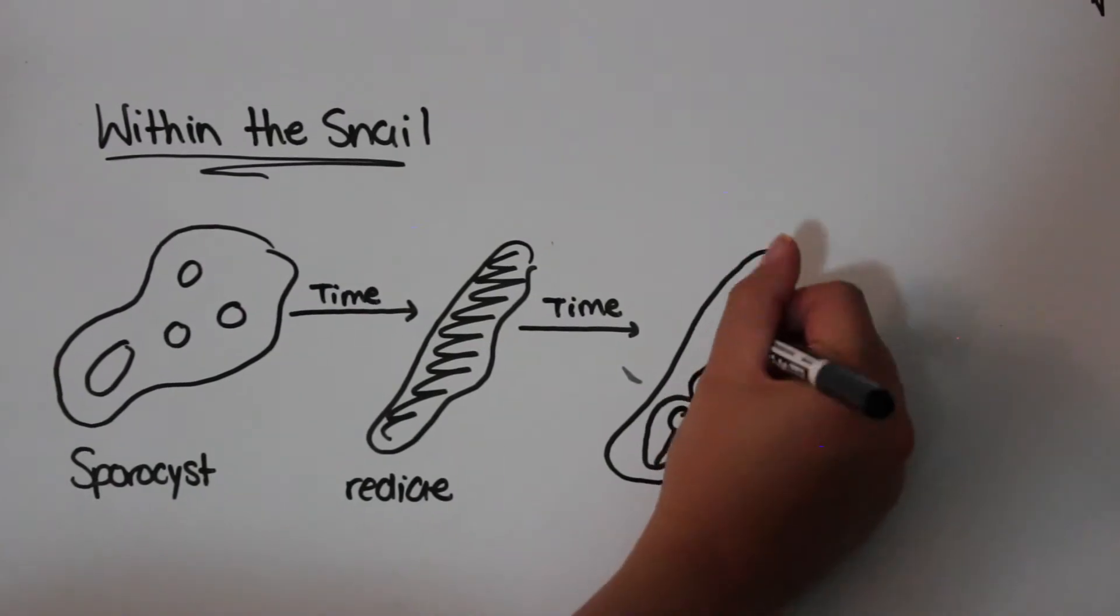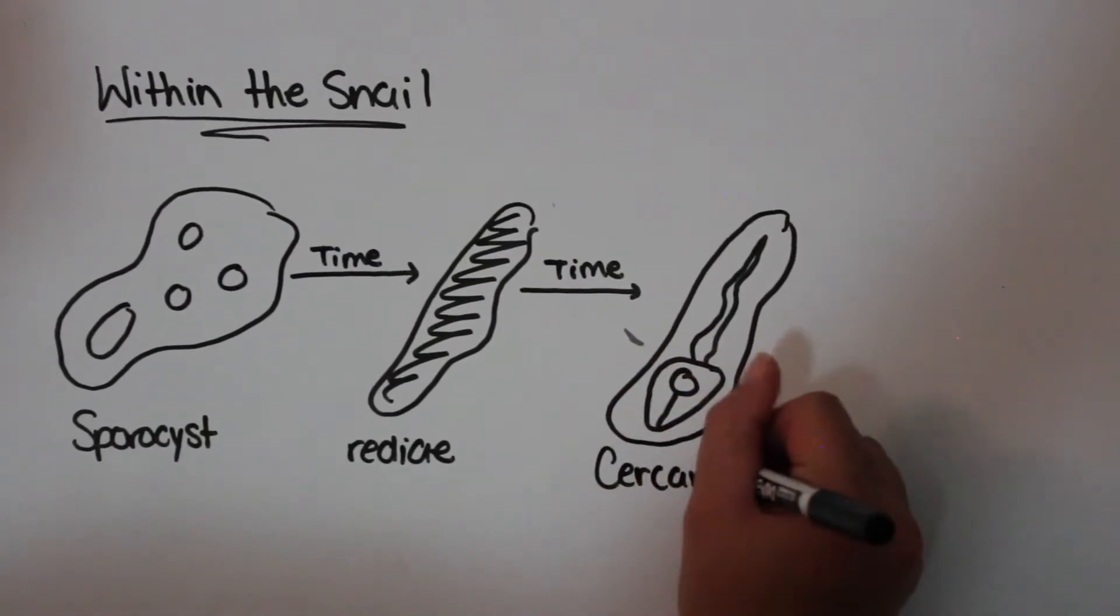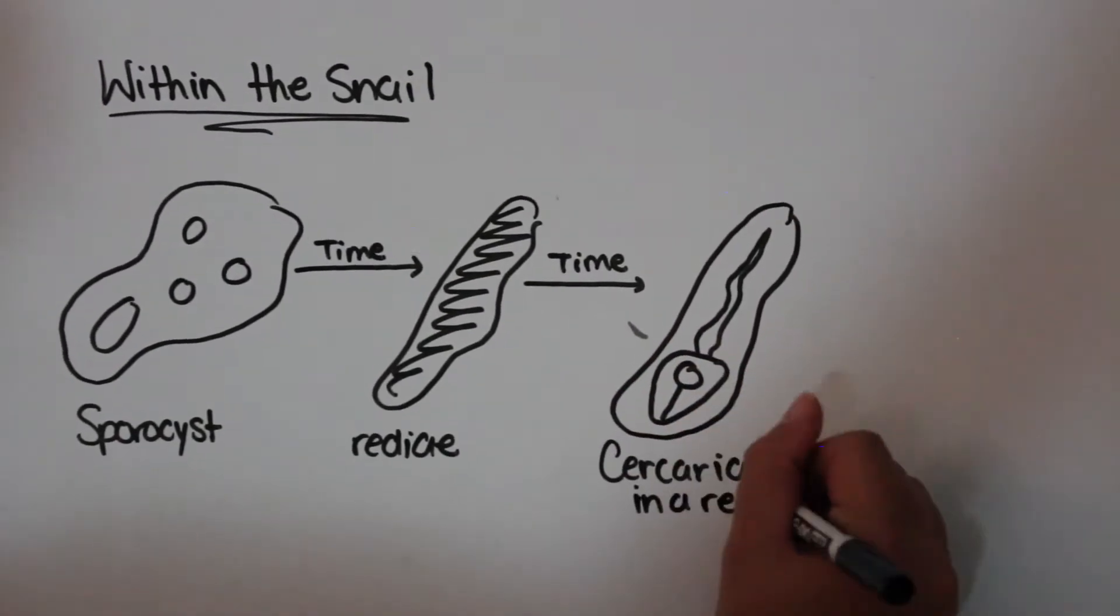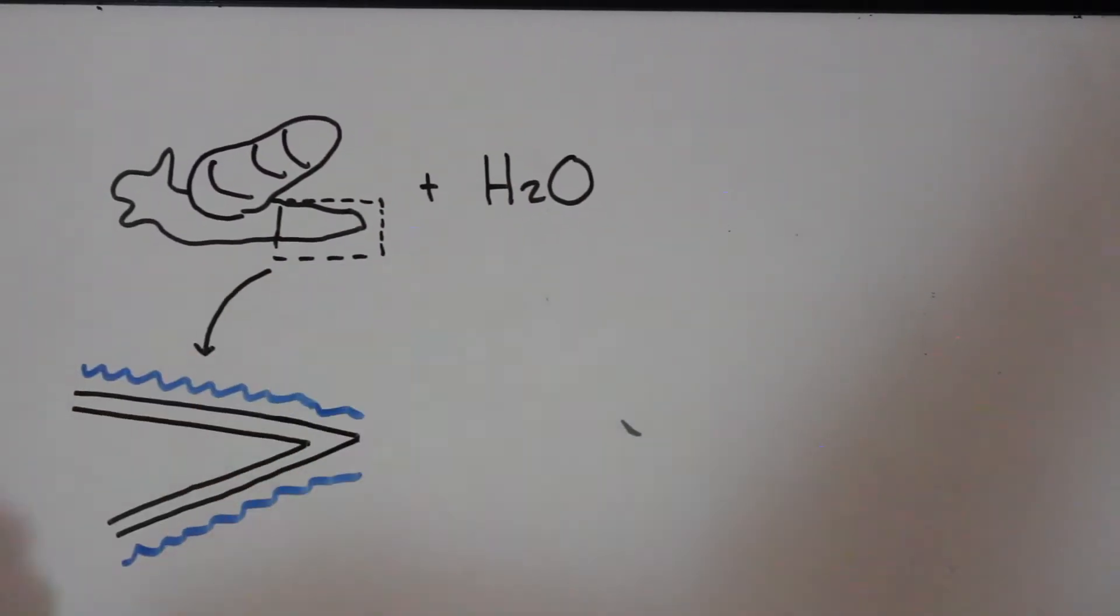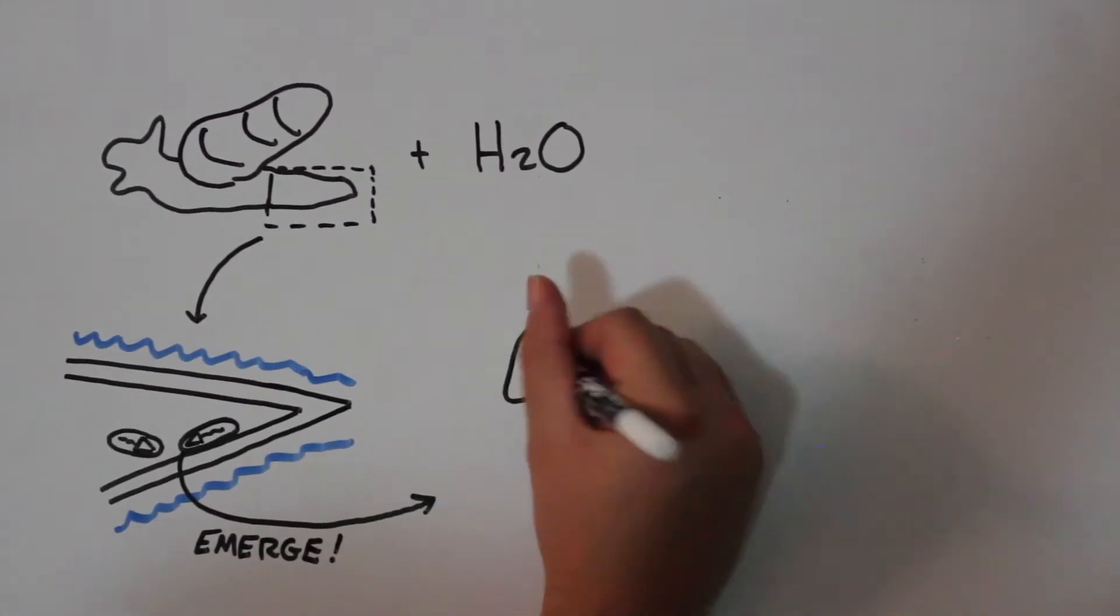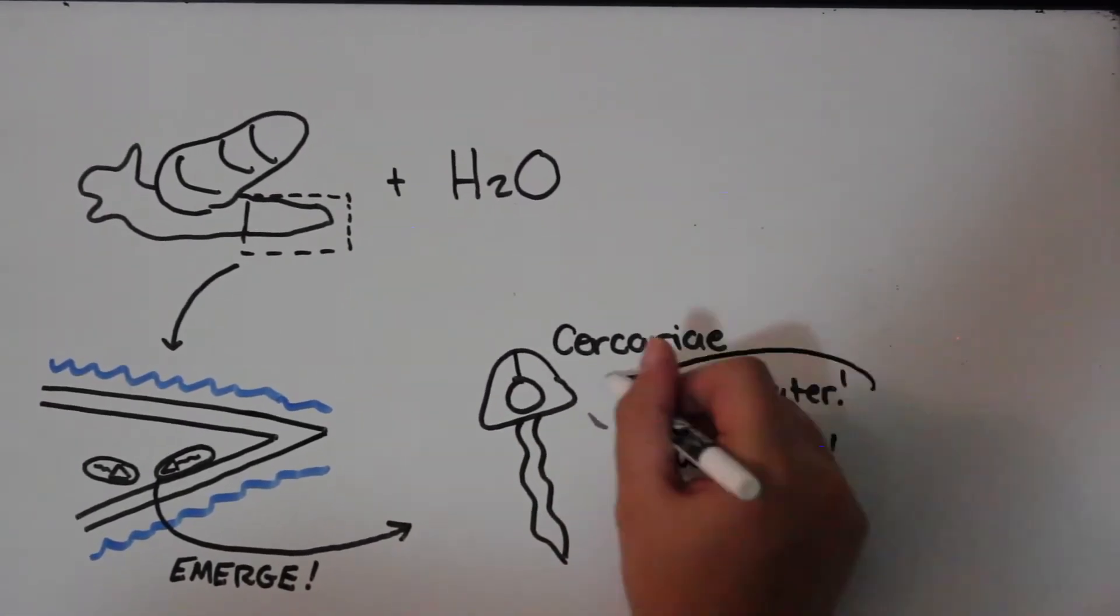Within the radii, circarii develop. Circarii emerge from the snail if there is a water source surrounding the snail. Circarii are 0.2mm long and motile.